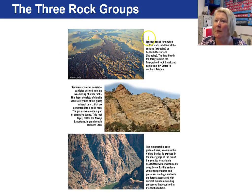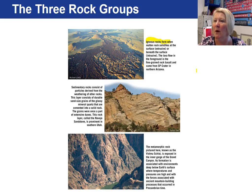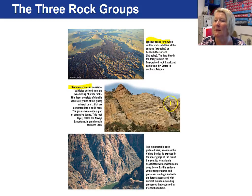Looking at this first picture, igneous rocks form when molten rock solidifies at the surface — we call that extrusive — and if it cools beneath the surface, we call it an intrusive igneous rock. This lava flow shown here is from SP Crater in northern Arizona. The middle picture shows sedimentary rocks, which consist of particles that were weathered from pre-existing rocks and then subsequently transported and lithified into a sedimentary rock. This is the Navajo Sandstone in Utah.